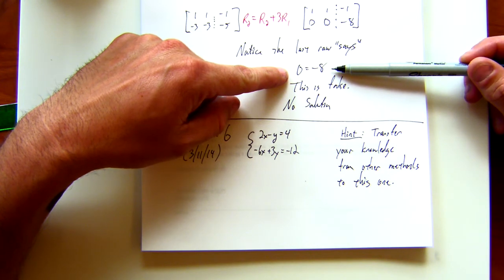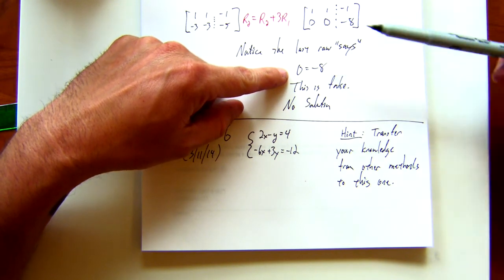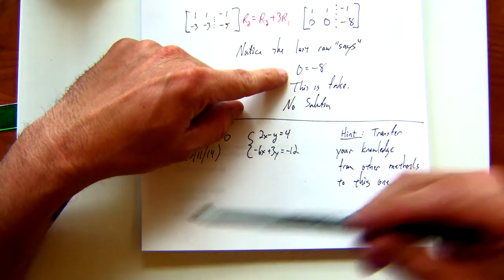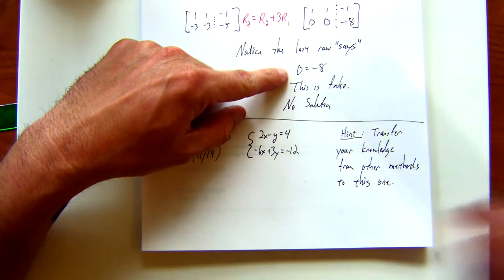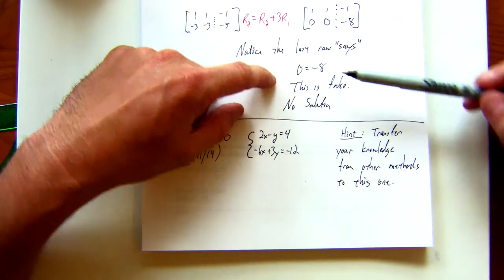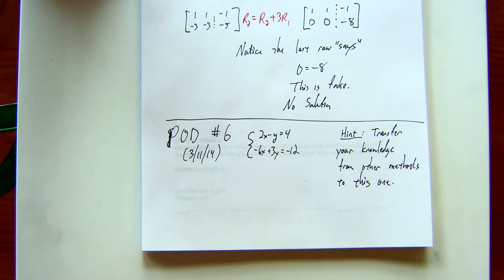What did it mean in the other methods? They're dependent, so the solution was infinite solution, or the equation, the solution was the line, right? So yeah, dependent system is a good word to know if you end up getting a true statement here.